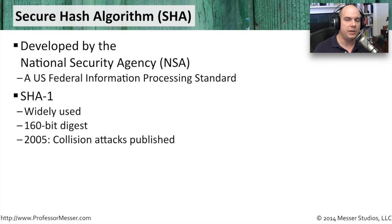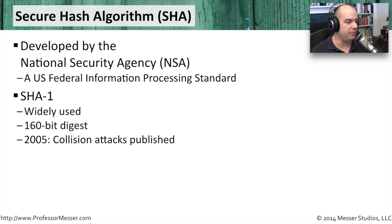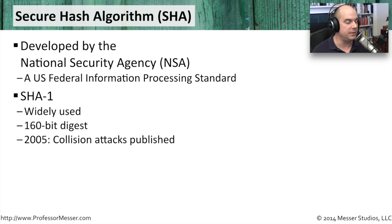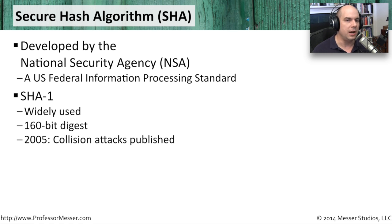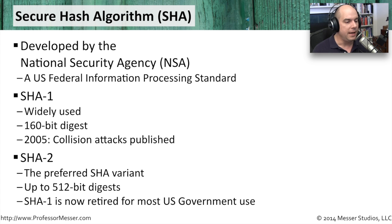SHA-1 produces a 160-bit digest, which is a little bit bigger than MD5. Unfortunately, a common problem with hashing algorithms struck again — in 2005, there was a publication describing collision attacks that could occur with SHA-1.